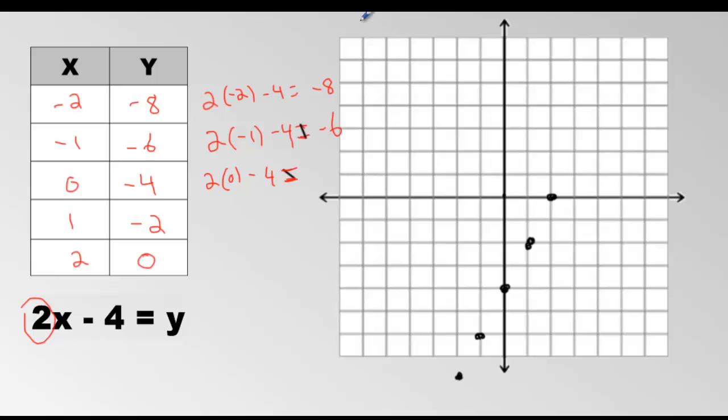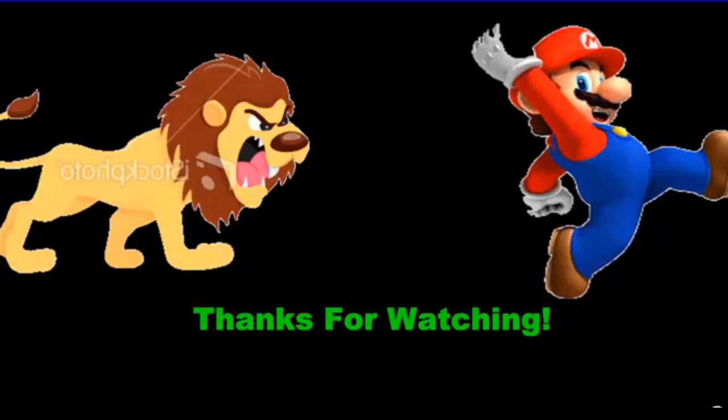And look what we have, ladies and gentlemen. We have a beautiful, lovely linear graph. It is a straight line. And we like to put arrows on both ends because it will continue forever in both directions.